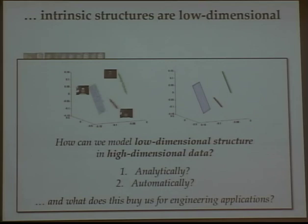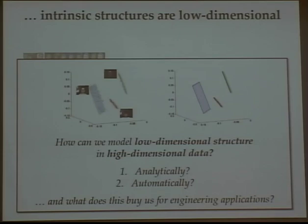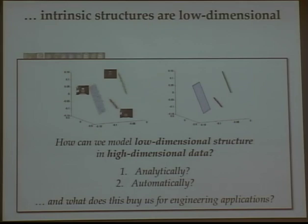Our problem really is how we can extract some kind of useful low-dimensional structure in high-dimensional imagery data. This could be physical structure coming from the process that generates the data, geometric structure such as mixtures of subspaces, or some kind of statistical structure. The question is really how do we capture structure in imaging problems in service of applications?